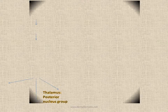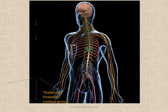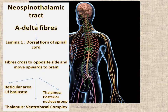The fibers of the neospinothalamic tract relay through the lamina 1 of the dorsal horn of the spinal cord before crossing over to the opposite side and moving upward to the brain. This tract terminates at three areas in the brain: the reticular area of the brain stem, the ventrobasal complex in the thalamus, and the posterior nucleus group in the thalamus.